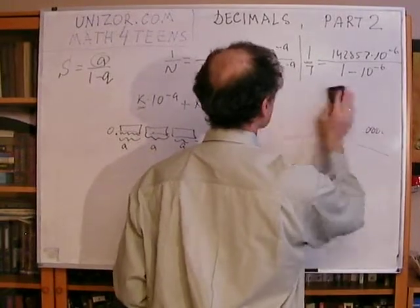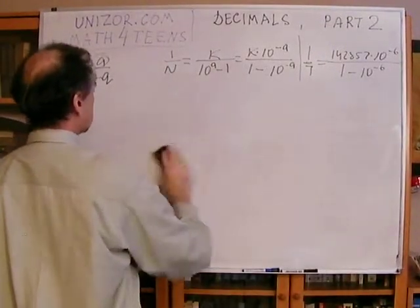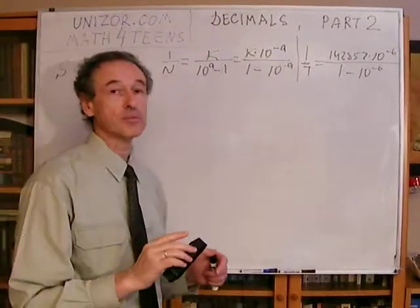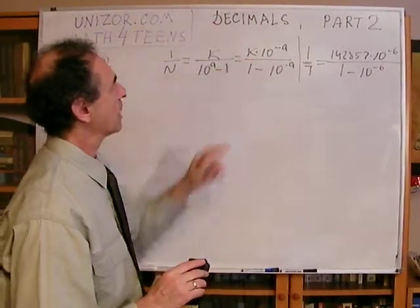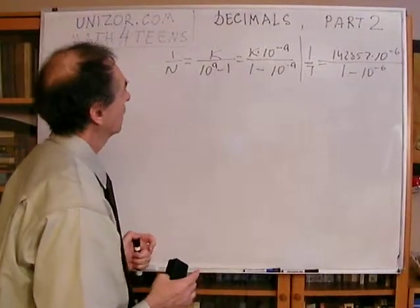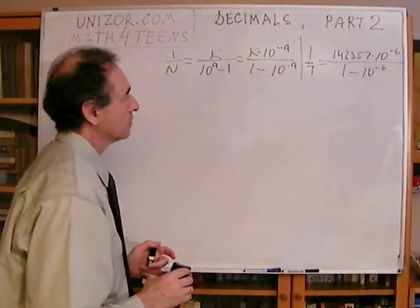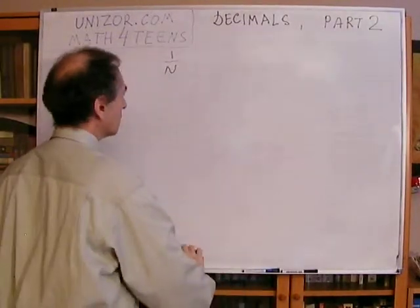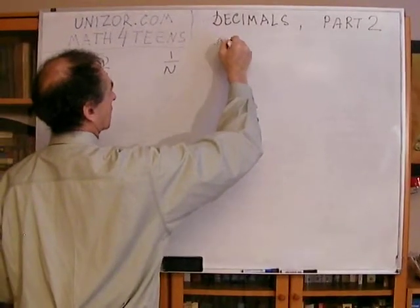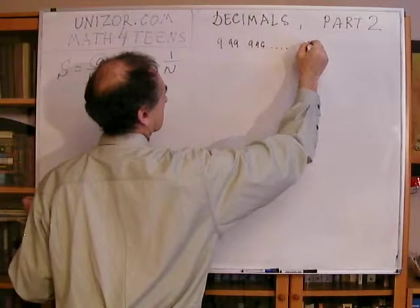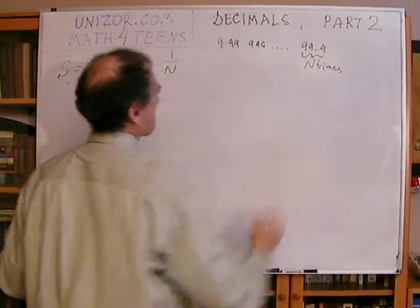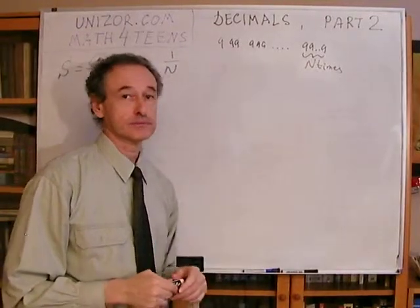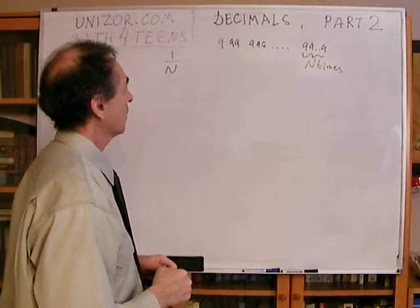We have essentially proven the theorem for Case 1, except one small detail — which you can read about in the written part of this lecture. It concerns the size of k, ensuring k times 10 to the minus a fits within a digits and doesn't overflow the period. That's a minor point. We have proven Case 1: when one of the N numbers of nines is divisible by N. What if none of them is?